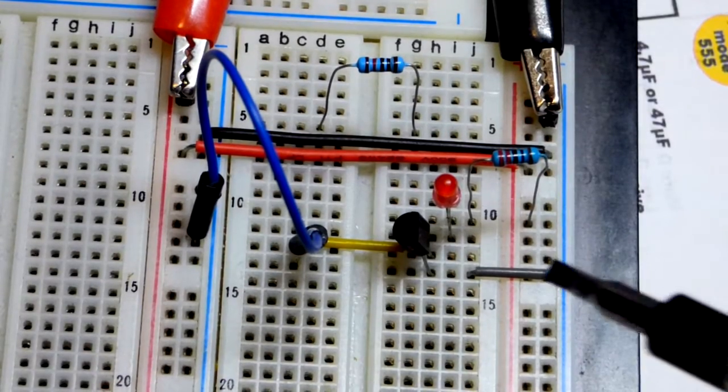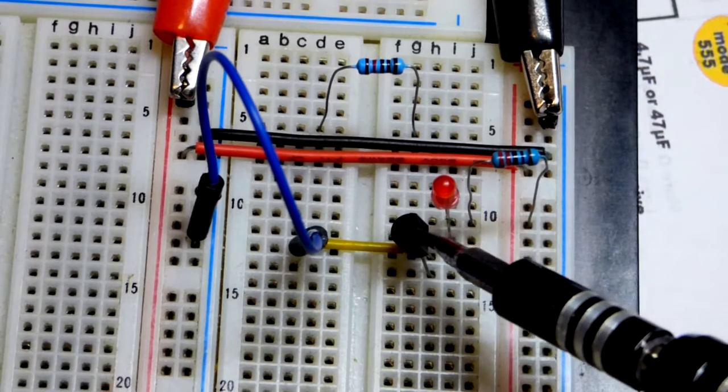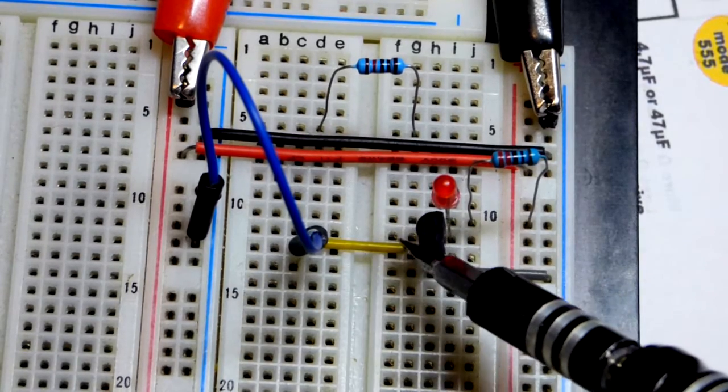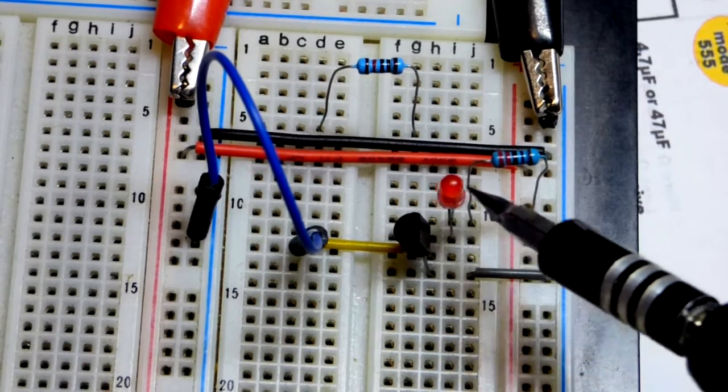So now in this video we're going to look at the N-channel enhancement mode MOSFET switch. We have a 2N7000 right here, flat side is to the right, we got the source, the gate, the drain.